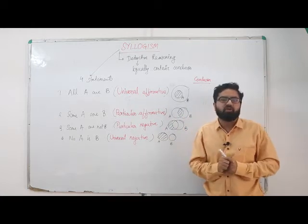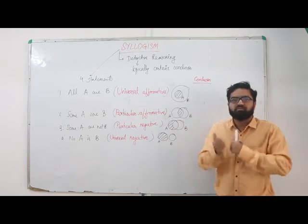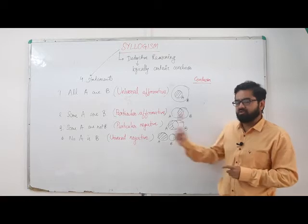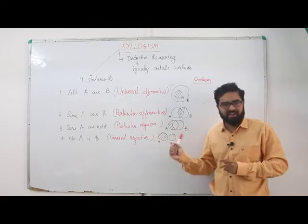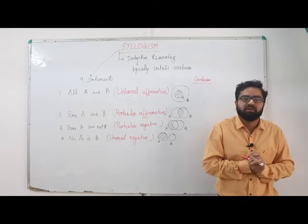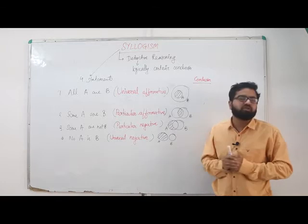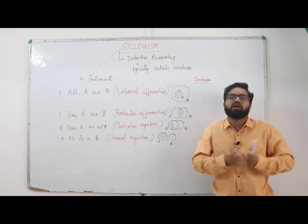The third statement is 'Some A are not B,' which is called particular negative - we're talking about elements not part of B, a specific part. The fourth statement is 'No A is B,' which is universal negative - we're talking about all elements of A.